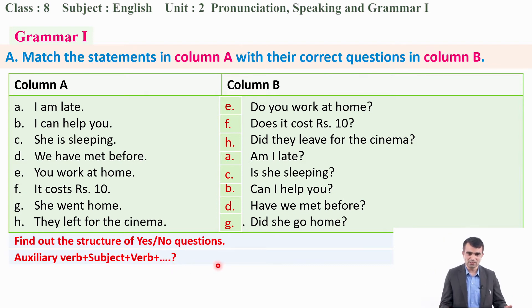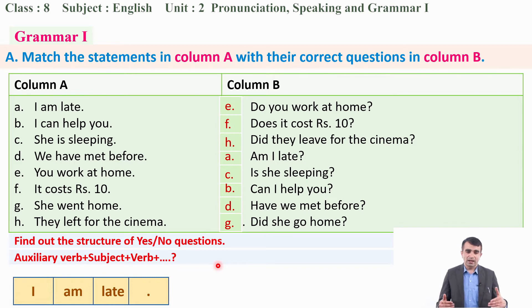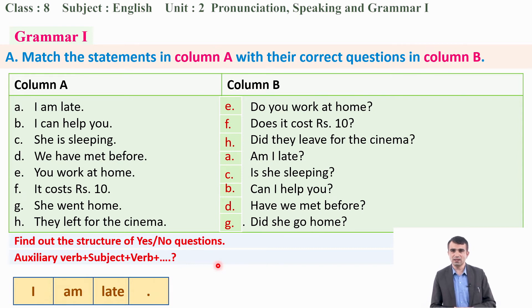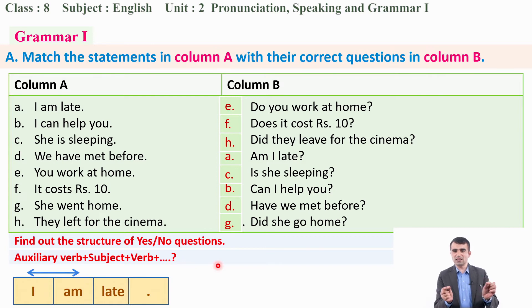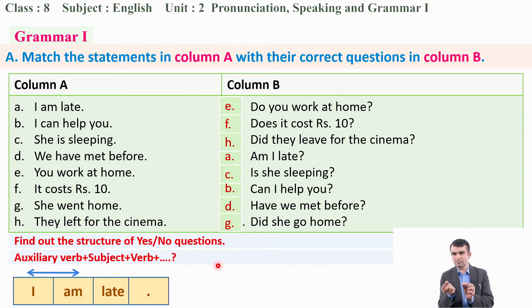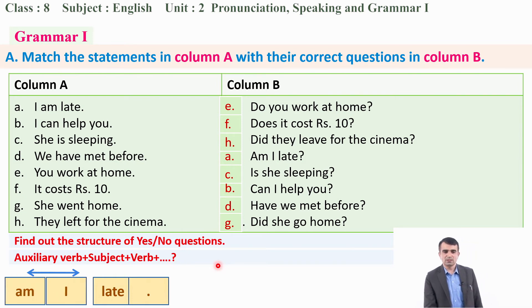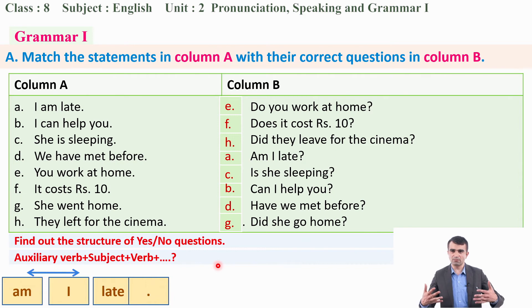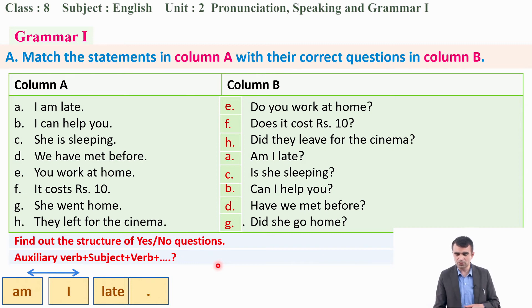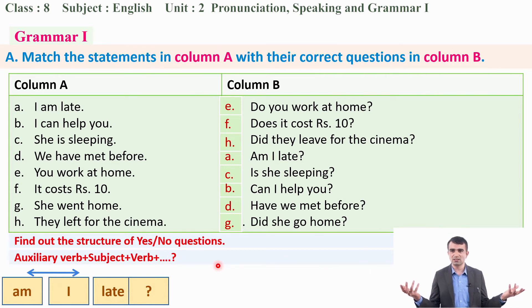For example, 'I am late' — the auxiliary verb 'am' and subject 'I' change their position, so 'am' comes first and 'I' goes second. If there is an auxiliary verb, just change the position, and replace the full stop with a question mark. It becomes 'Am I late?' Easy, isn't it?